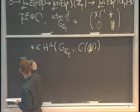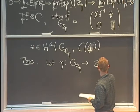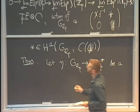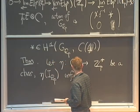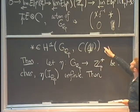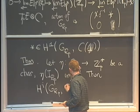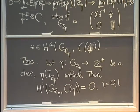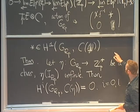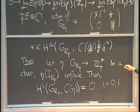In fact Tate proves a more powerful theorem. Let η: G_{ℚ_p} → ℤ_p^× be a character which is infinitely ramified — meaning that the image of inertia is infinite. Then he has control over the cohomology: H^i(G_{ℚ_p}, C ⊗ η) = 0 for i equals both 0 and 1.